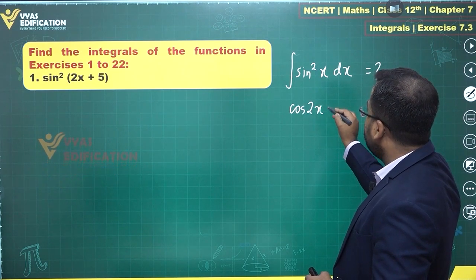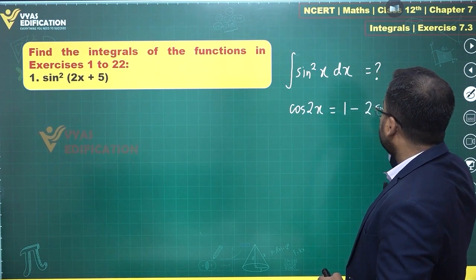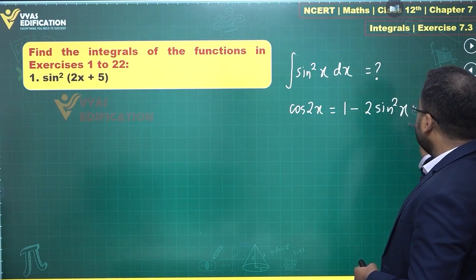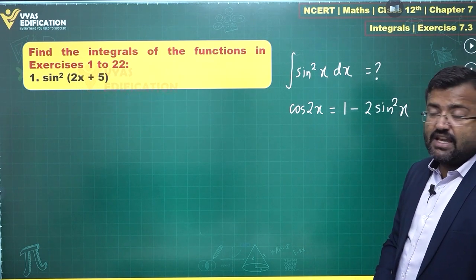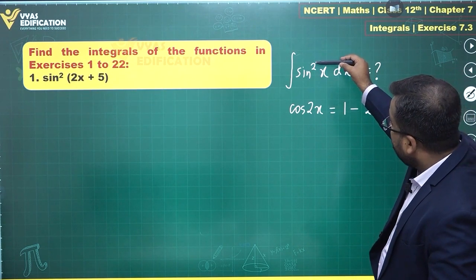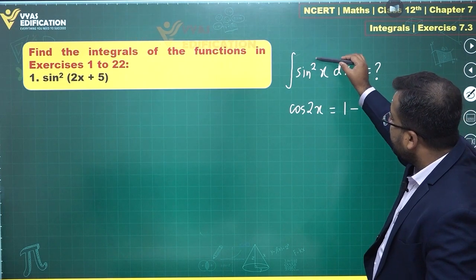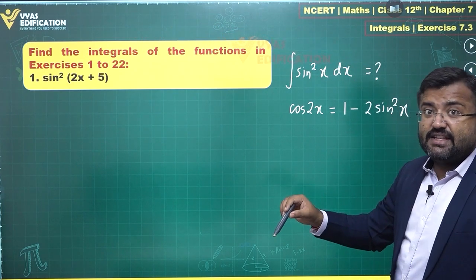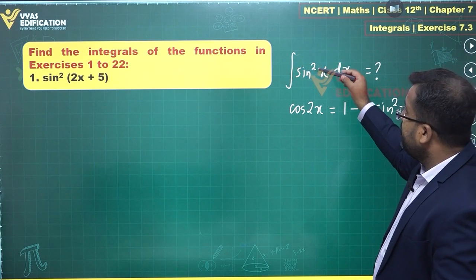This identity says cos 2x is equal to 1 minus 2 sin²x. Oh, this is an identity of cos 2x, yes. But the important thing is that power 2 was an issue.